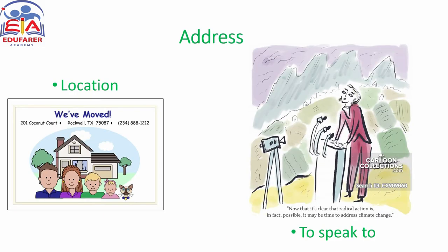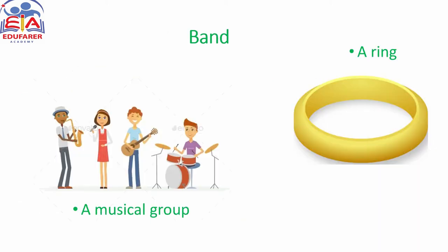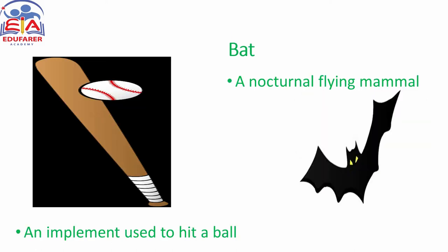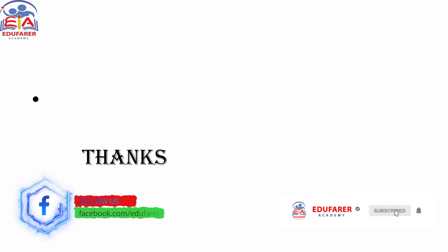For example, park: the sound a dog makes, and a trace or layer. Band: a musical group, a ring. Bat: a nocturnal flying mammal and an implement used to hit a ball. That's all about homonyms. Thanks a lot for watching our video.